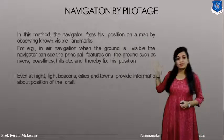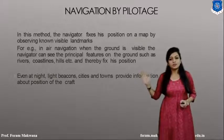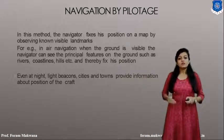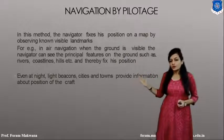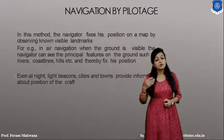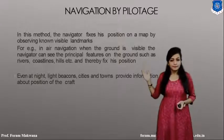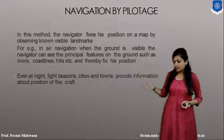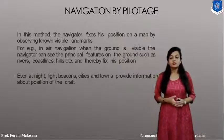In air navigation when the ground is visible, a navigator can see the principal features on the ground such as rivers, coastlines, and hills, and based on that is able to fix the position of the aircraft. This works during daylight, but even at night, lights from cities and towns provide information about the position of the aircraft.